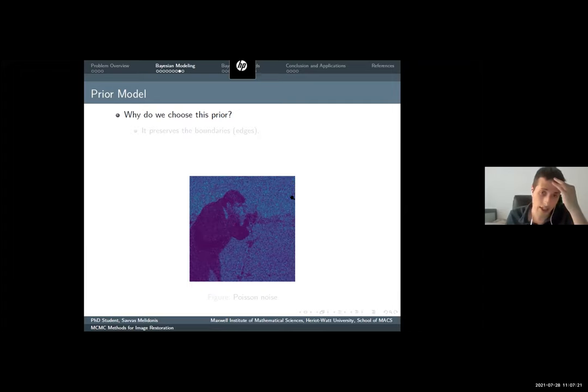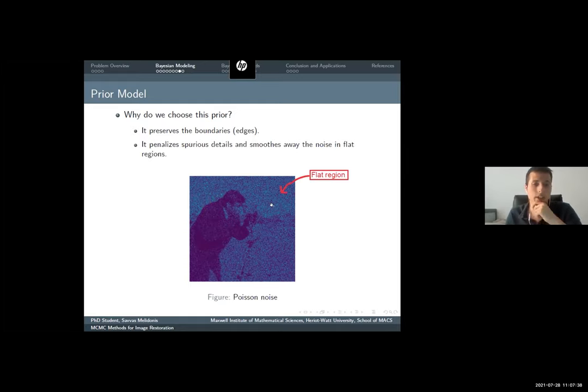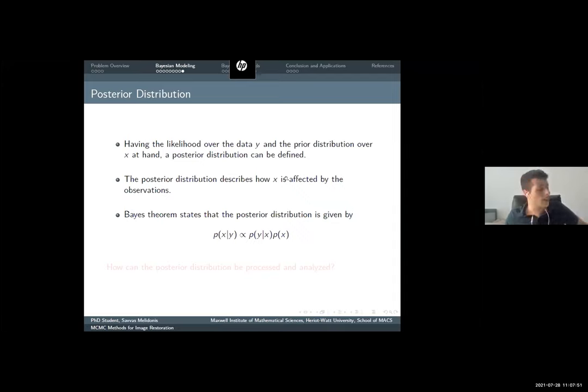But why we need such a prior? This prior is particularly good because it preserves the boundaries. We will see that in reconstruction, we do not lose the figure of the cameraman and maybe the camera here. And also, it smooths away the noise of the flat regions such as the sky or the grass here.